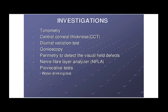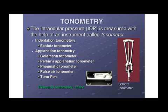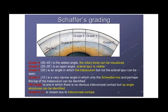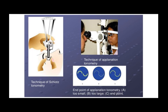Investigations include tonometry, corneal thickness, diurnal variation assessment, gonioscopy, perimetry, nerve fiber layer analyzer, and other tests like the water drinking test. This figure shows the Schiotz tonometer; different types of tonometers are available, including the applanation tonometer used on the slit lamp.